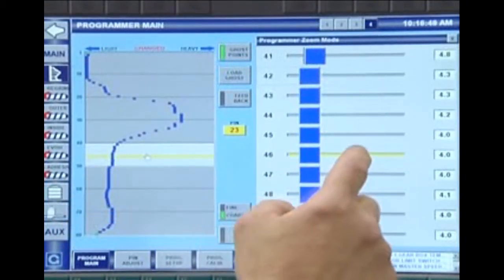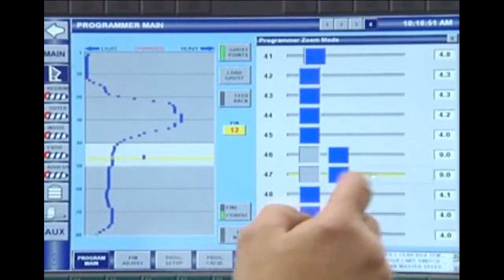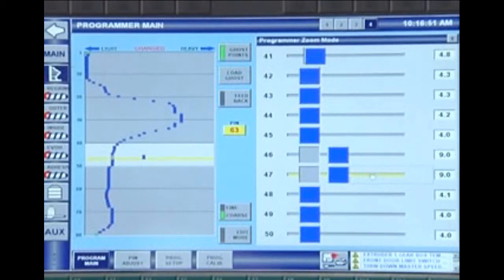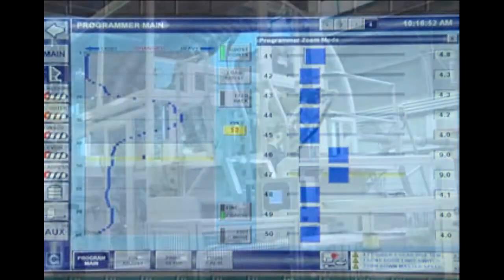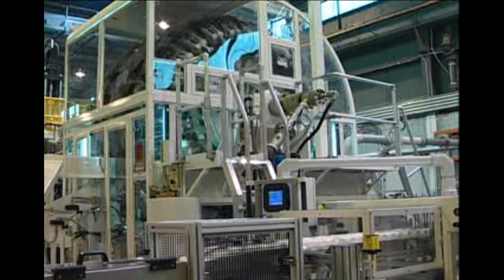For precise parison distribution, weight and wall thickness consistency, each die head is programmed individually. Common to both blow molding systems are the wheel, upward extrusion and the rotary takeout unit.